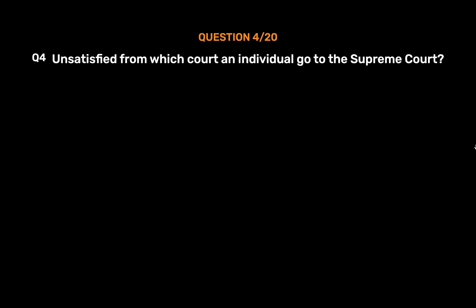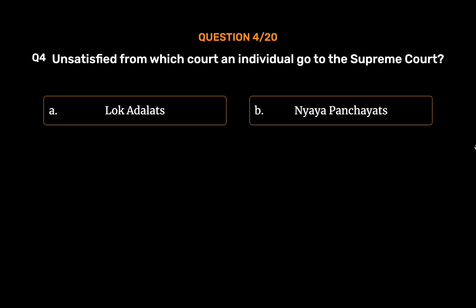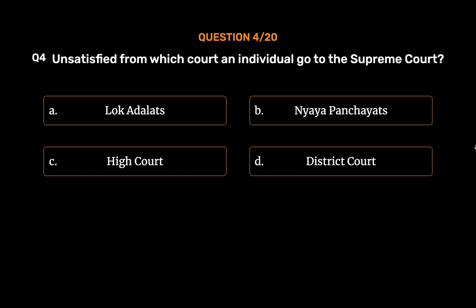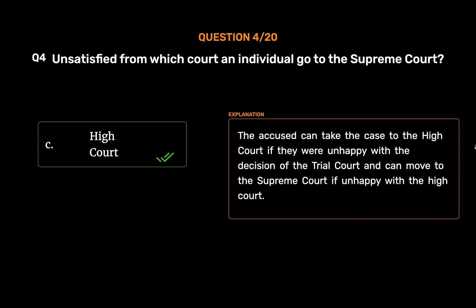Question No. 4. Unsatisfied from which court can an individual go to the Supreme Court? Option A: Lok Adalats. Option B: Nyaya Panchayats. Option C: High Court. Option D: District Court. The correct answer is Option C: High Court. The accused can take the case to the High Court if they were unhappy with the decision of the trial court, and can move to the Supreme Court if unhappy with the High Court.